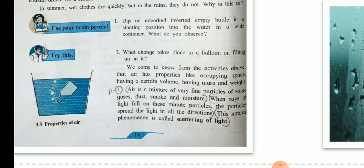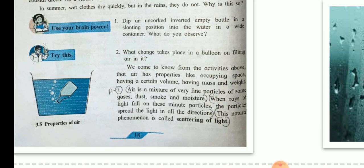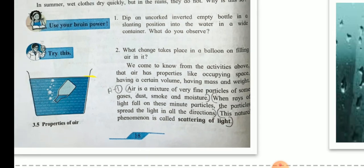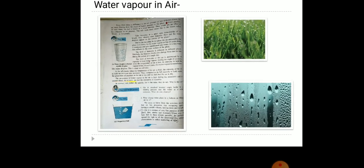Air is a mixture of very fine particles of some gases, dust, smoke and moisture. When the rays of light fall on these minute particles, the particles spread the light in all directions. This natural phenomena is called scattering of light.